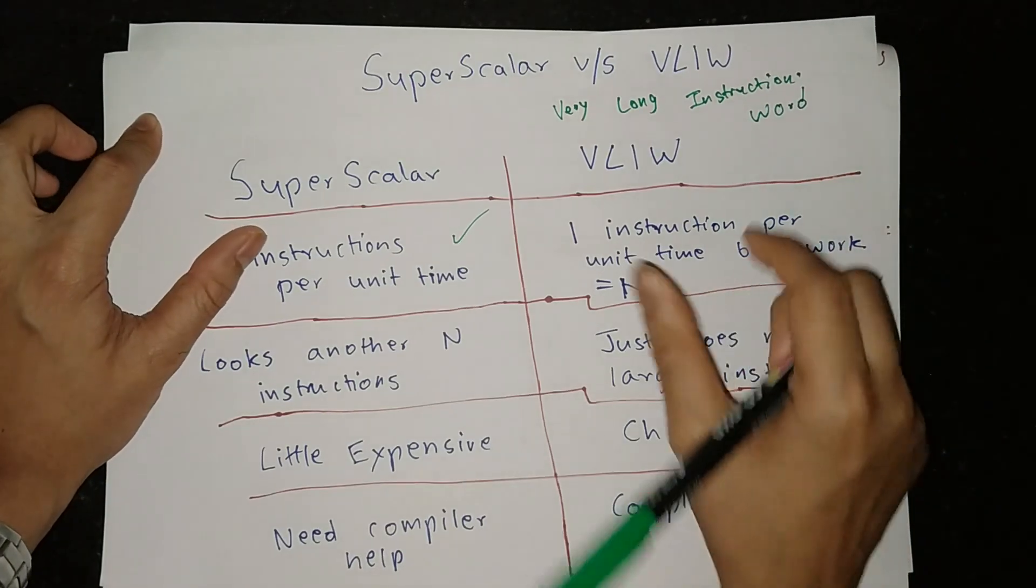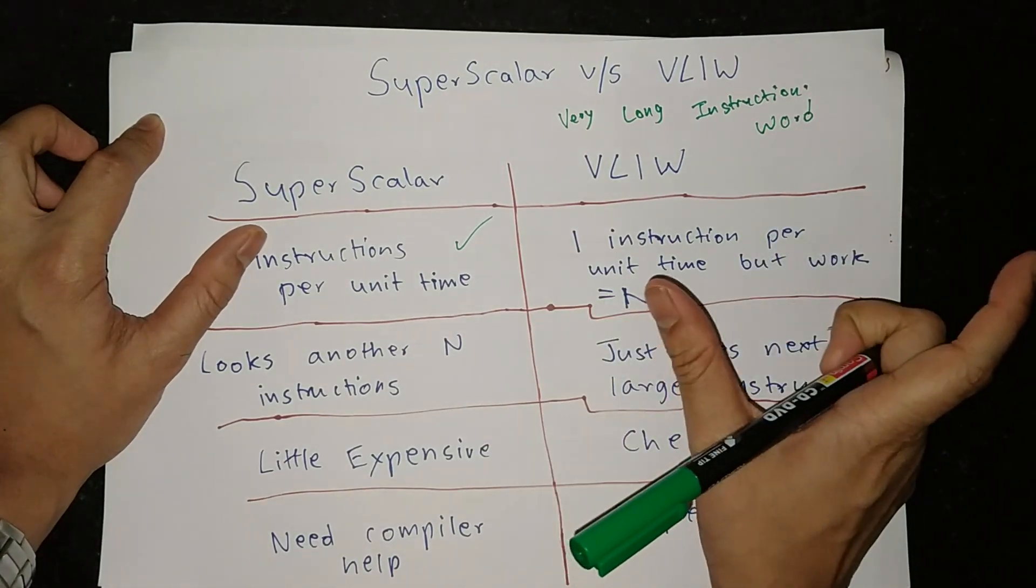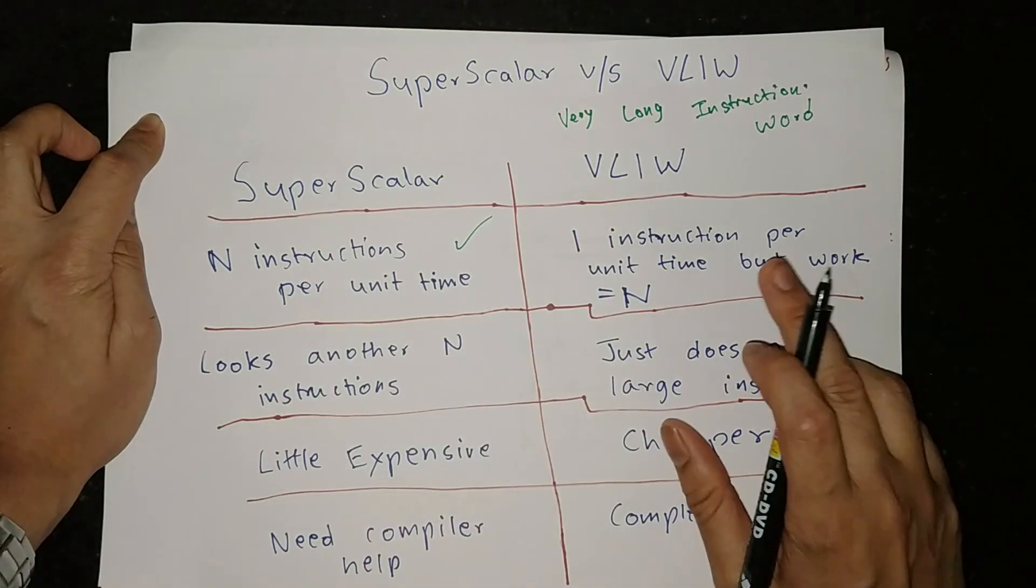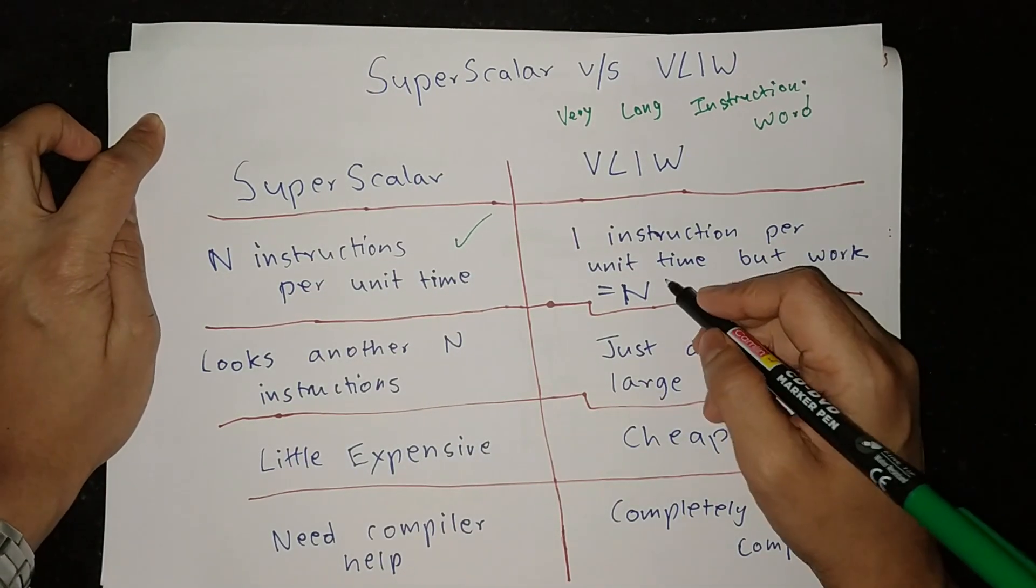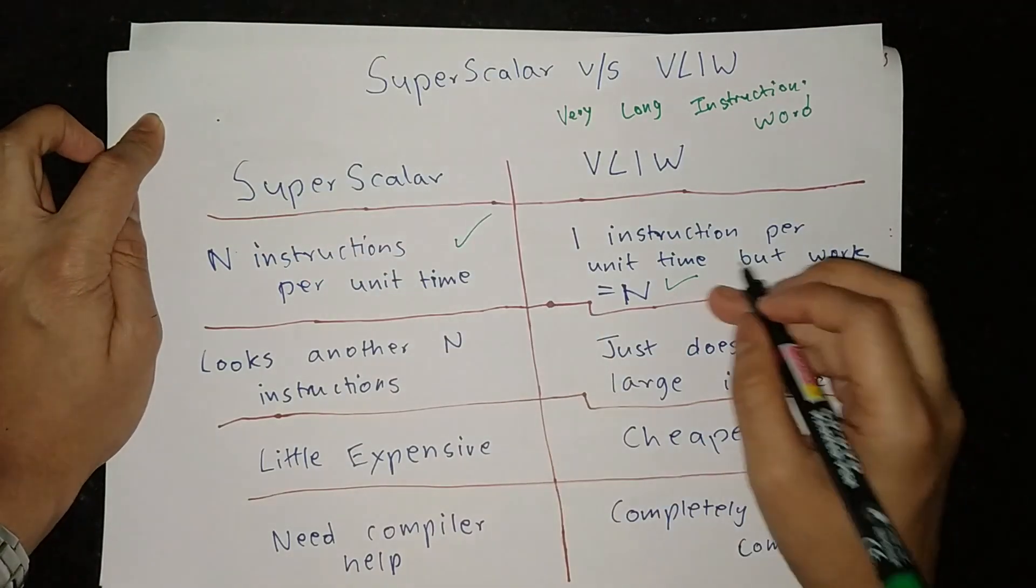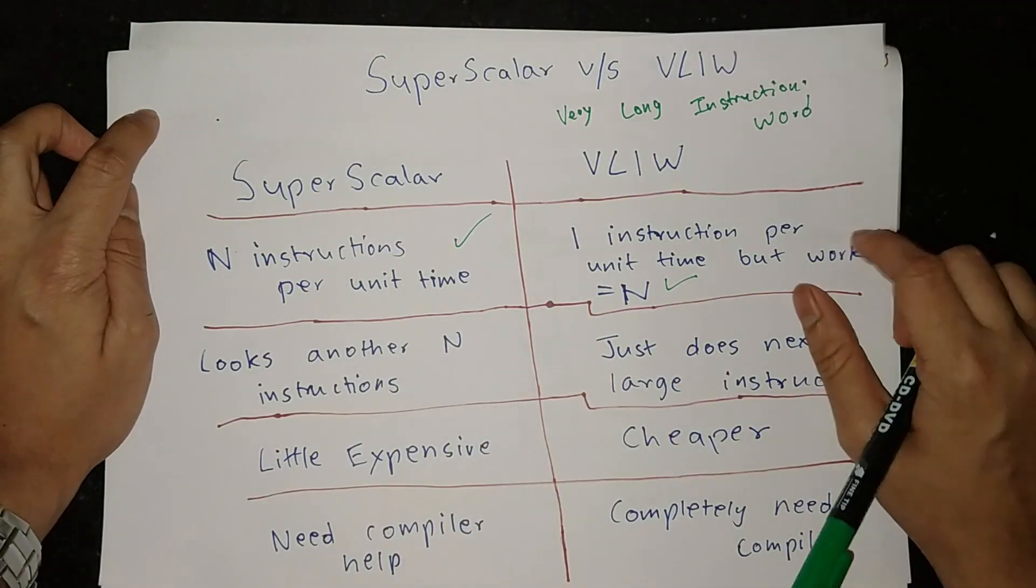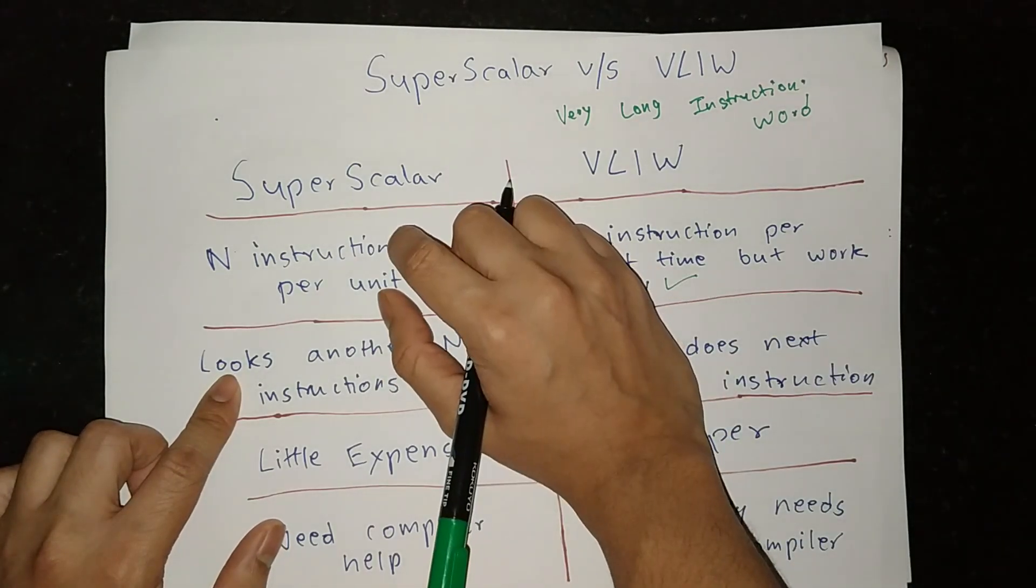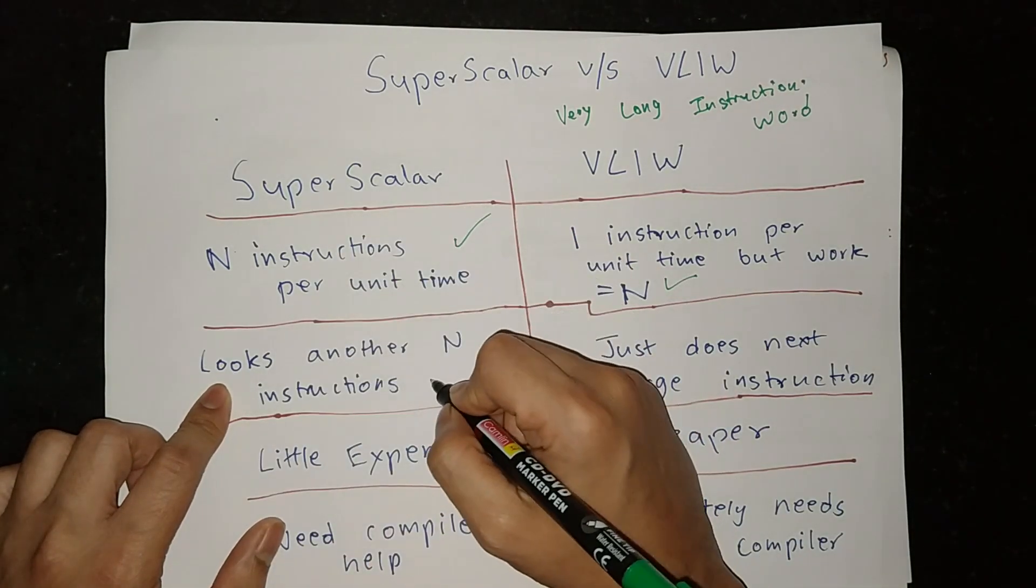This is why VLIW is cool. One instruction, but many operations work in one unit time. One instruction I'm taking has three little instructions. I take a big instruction that has three of them. So the VLIW does this - if it completes three instructions, it will see the next three instructions.